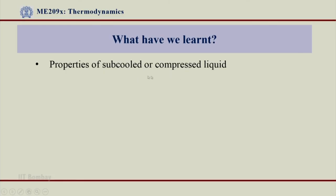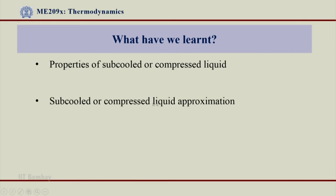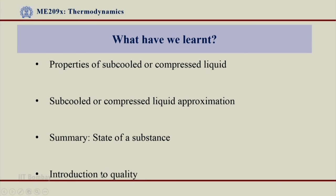What we have learnt: properties of subcooled or compressed liquid, and what kind of approximation we have to do for it — how to get the properties S, U, V for compressed liquid, including enthalpy. In summary, the state of a substance can be obtained from various regions, and we have introduced the term quality, which will determine the properties of the two-phase mixtures. Thank you very much.